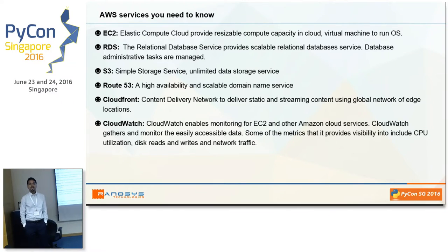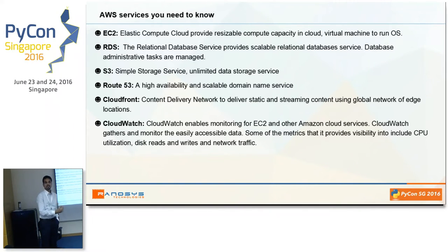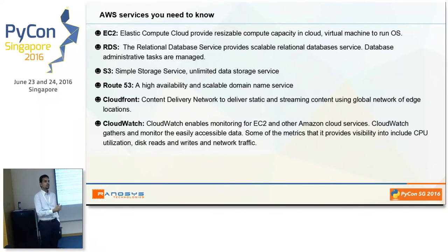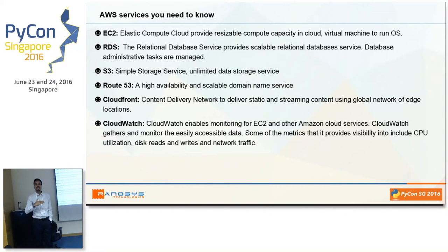Second is RDS. AWS is infrastructure as a service, meaning you have to manage everything yourself. However, some services of AWS are managed. RDS is one of them — it provides a managed database service where you can host your database. It supports around four or five databases like MySQL, MSSQL, and Oracle. You just start an RDS instance, deploy your database, and do not worry about database backup or automatic patch installation — it handles that itself.